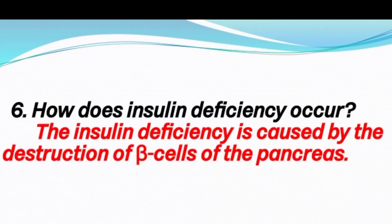Sixth question: How does insulin deficiency occur? Answer: Insulin deficiency is caused by the destruction of beta cells of the pancreas.